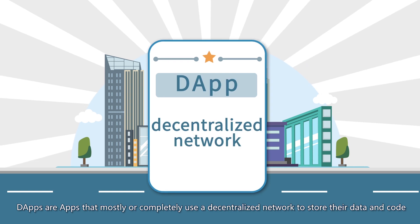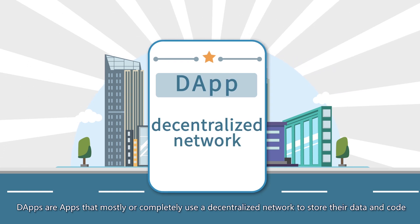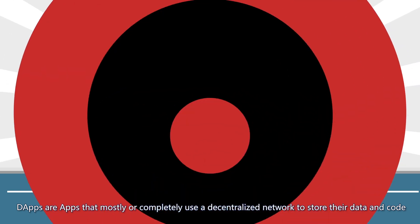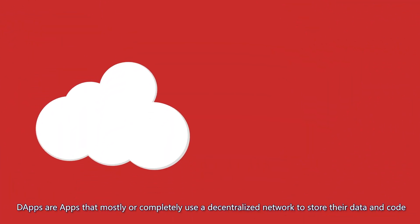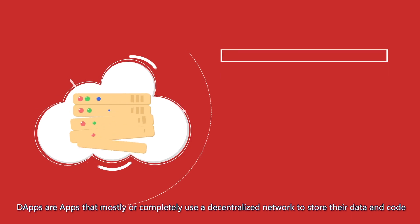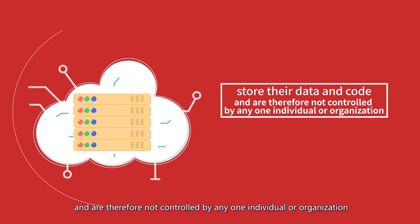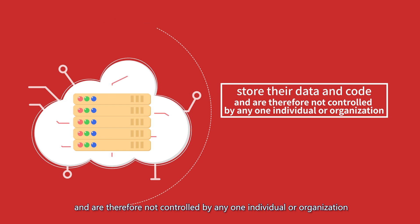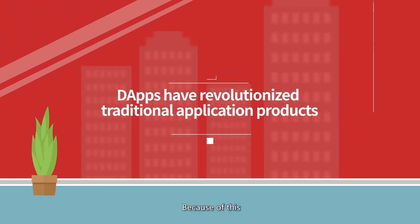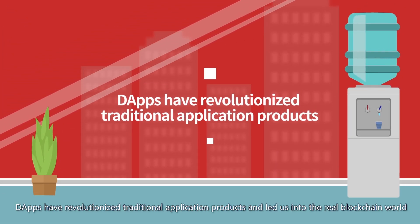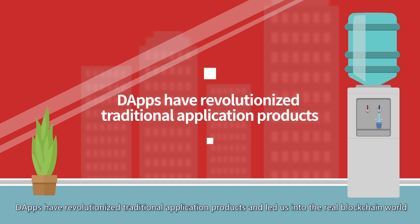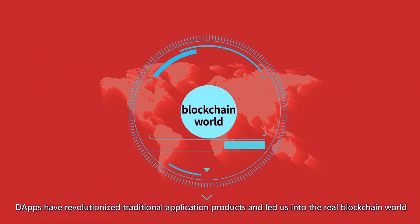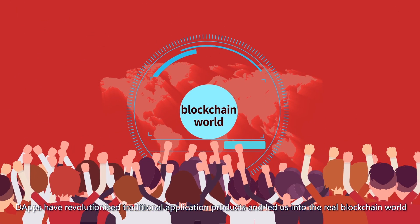D-Apps are apps that mostly or completely use a decentralized network to store their data and code, and are therefore not controlled by any individual or organization. Because of this, D-Apps have revolutionized traditional application products and led us into the real blockchain world.